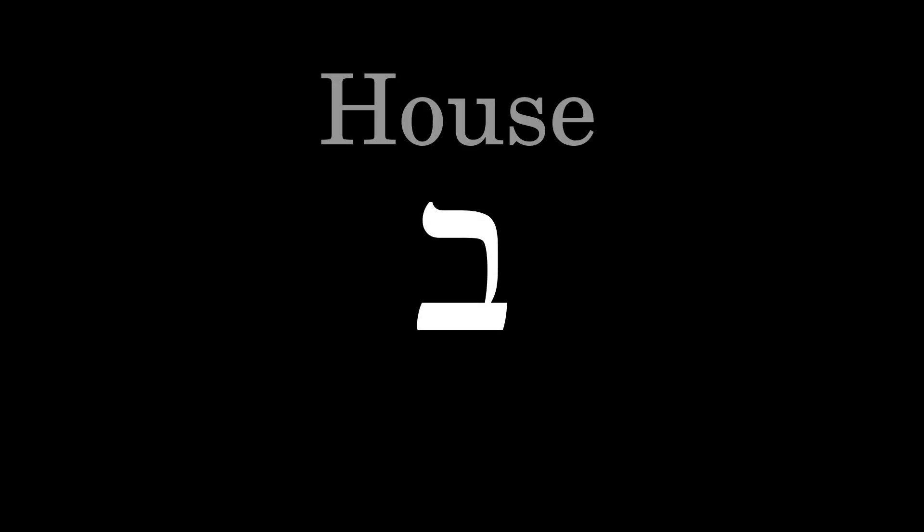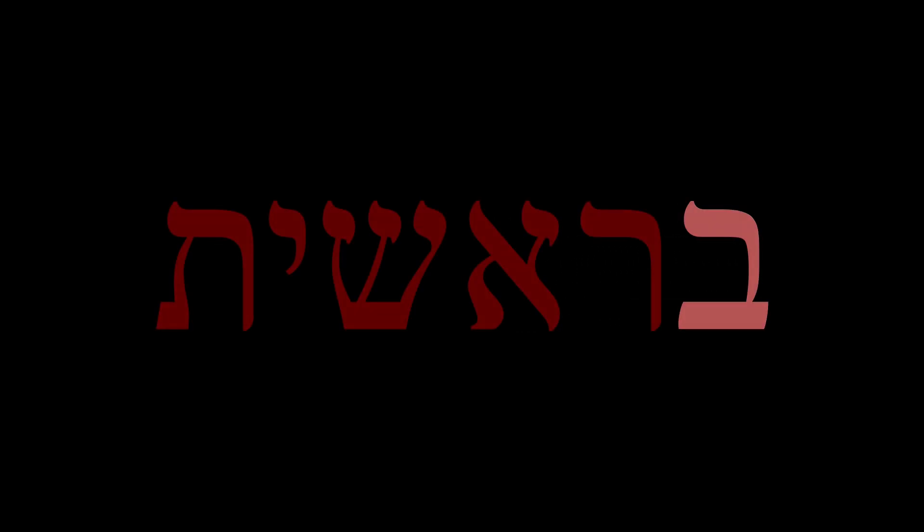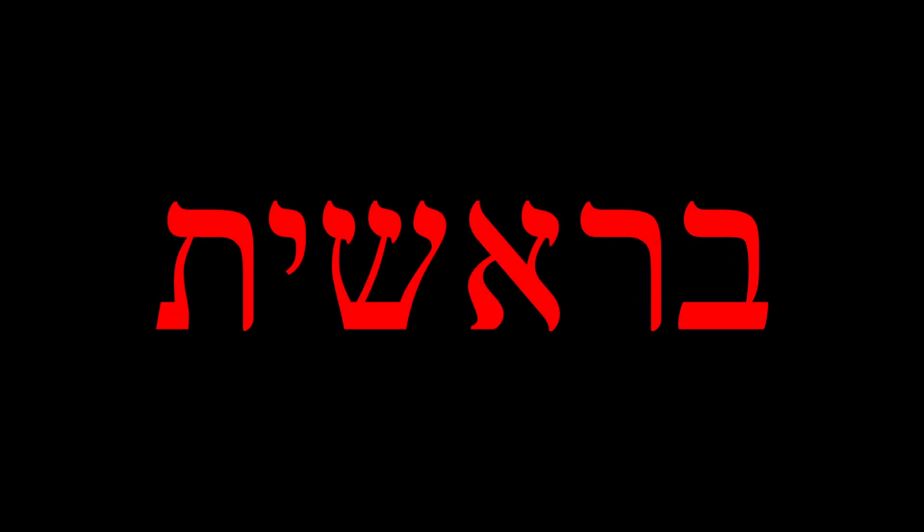The second letter in the Hebrew alphabet is Bet. Bet is the Hebrew word for house, like in Bethlehem meaning 'house of bread.' When this letter begins a word, it's a preposition meaning 'in.' For instance, the first word of Genesis starts with a Bet, translated as 'in the beginning.'